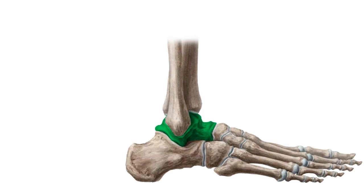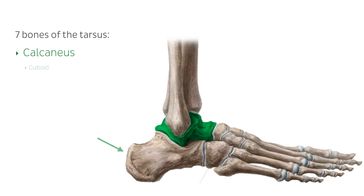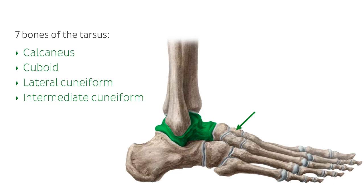As we return to our lateral view of the foot, we have the talus highlighted in green. The talus is one in a group of seven bones of the foot, collectively referred to as the tarsus. These seven bones are the calcaneus, the cuboid, the lateral cuneiform, the intermediate cuneiform, the medial cuneiform, the navicular, and the talus.